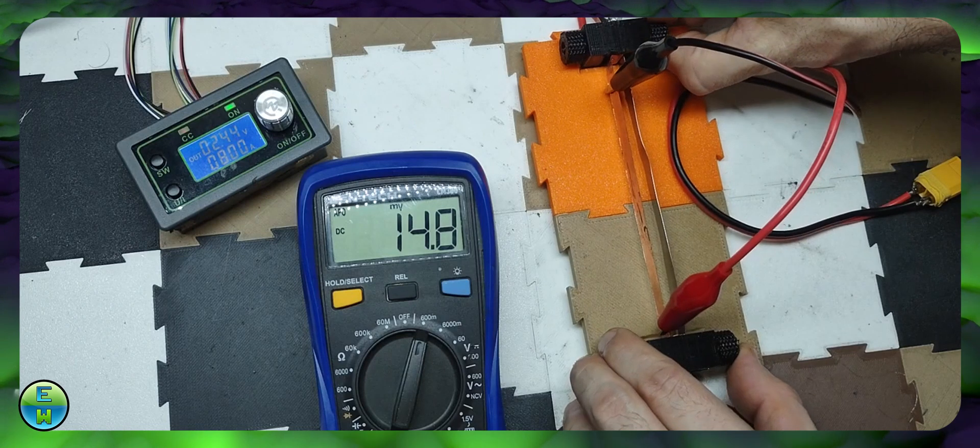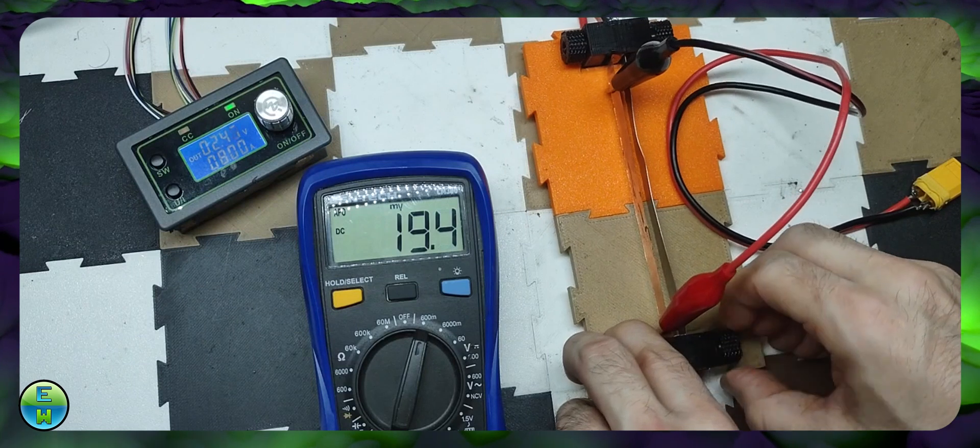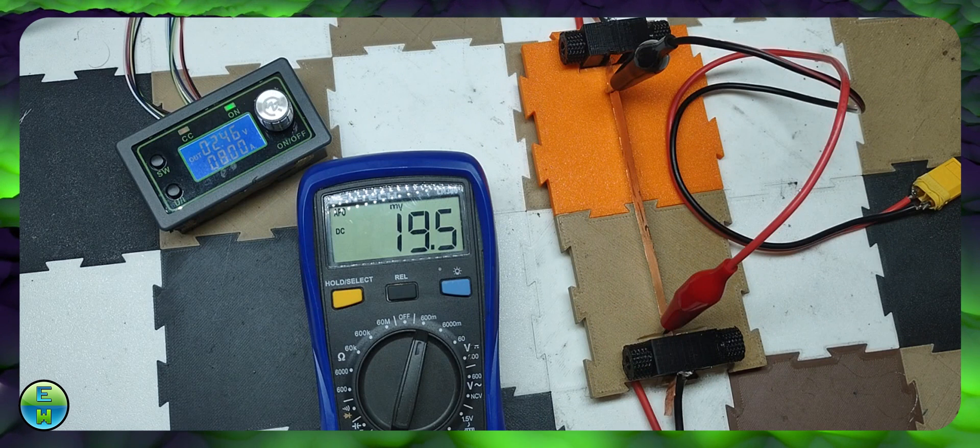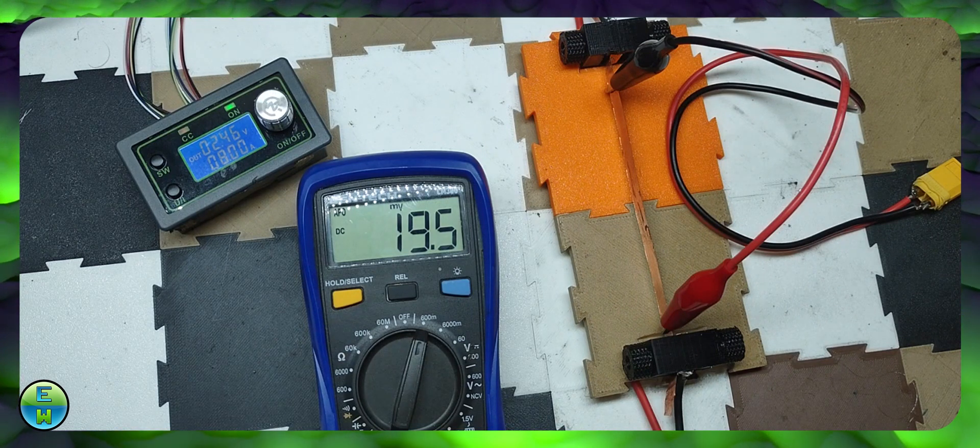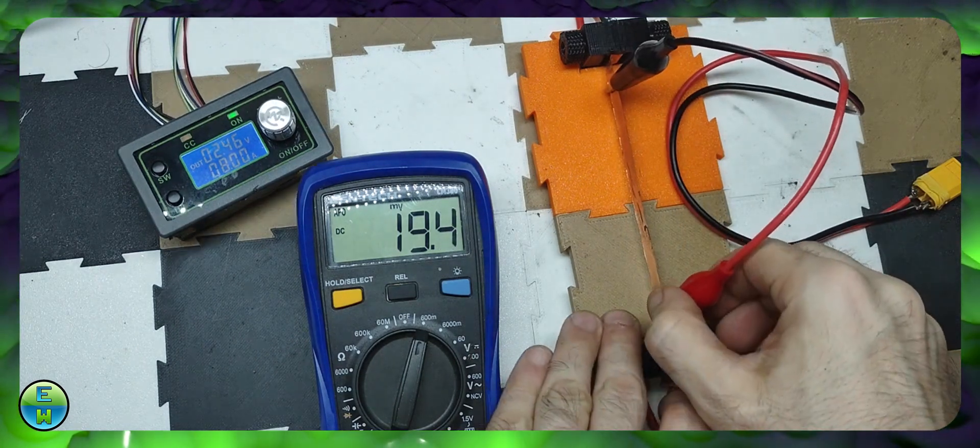Check it out. I'm going to remove the nickel as we monitor the voltage drop across the copper. Removing the nickel. And there we go. We can clearly see that more current is flowing through the copper now because it doesn't have the nickel there to help it.